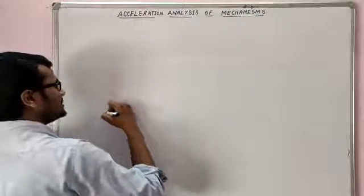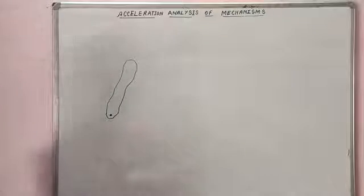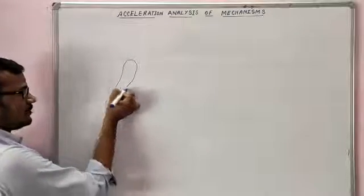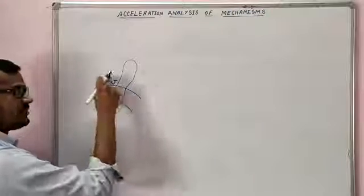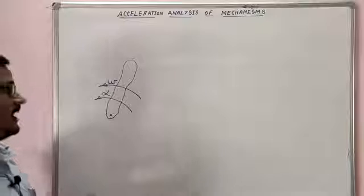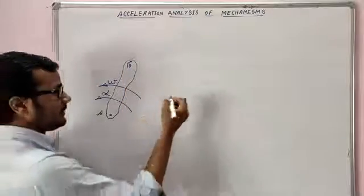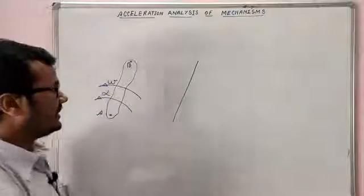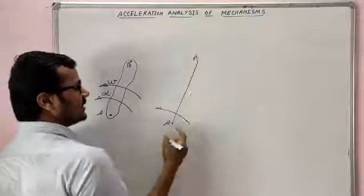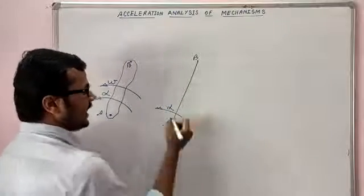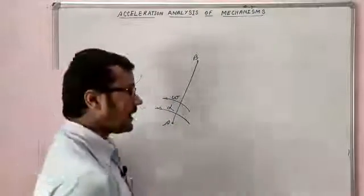Let me take an example. Suppose I have some arbitrary link pivoted at a point, having some rotational motion. Let the angular velocity of this link be omega and angular acceleration be alpha. Let the pivot point be point A and one end of the link be point B. So the link AB has angular acceleration alpha and angular velocity omega, and it is rotating anti-clockwise.